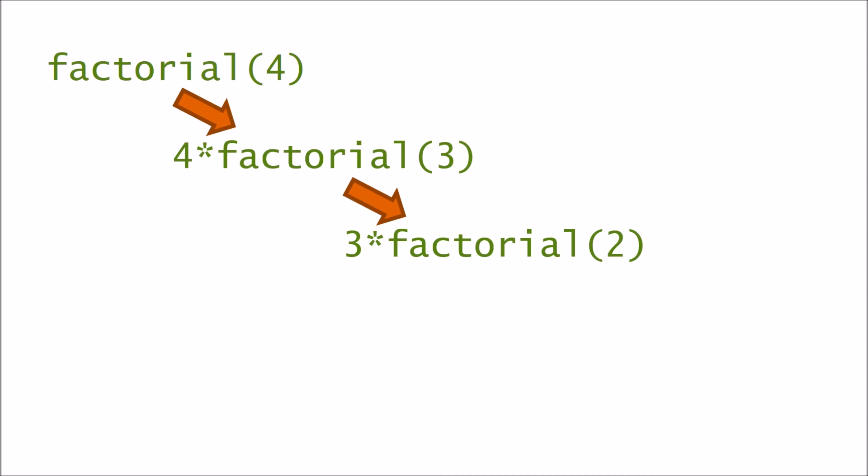The factorial of 3, as we know, is 3 times the factorial of 2. Now we call the factorial function once again to calculate the factorial of 2. The factorial of 2 is 2 times the factorial of 1.